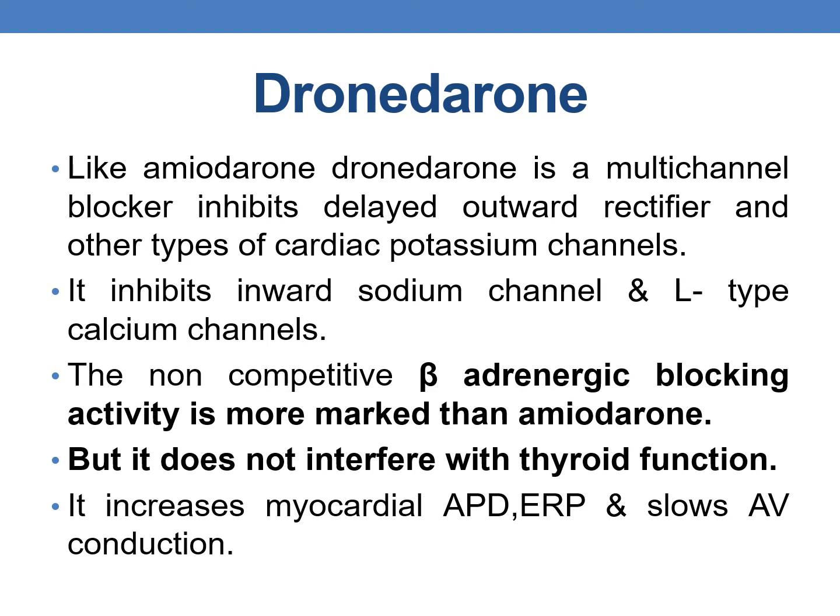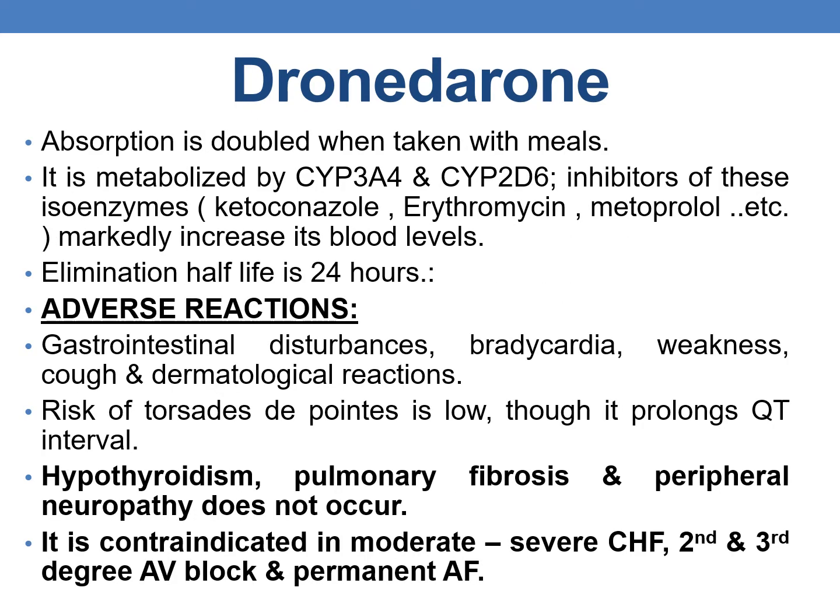Like amiodarone, dronedarone is a multi-channel blocker. It inhibits delayed outward rectifier and other cardiac potassium channels (Class 3 action), inward sodium channels, and L-type calcium channels. The non-competitive beta-adrenergic blocking activity is more marked in dronedarone than in amiodarone. However, it does not interfere with thyroid function. It increases myocardial action potential duration, effective refractory period, and slows AV conduction. Absorption of dronedarone is doubled when taken with a meal. It is metabolized primarily by CYP3A4 and CYP2D6, and the elimination half-life is 24 hours.